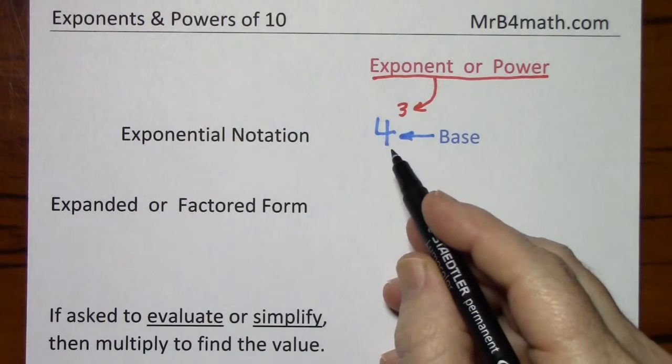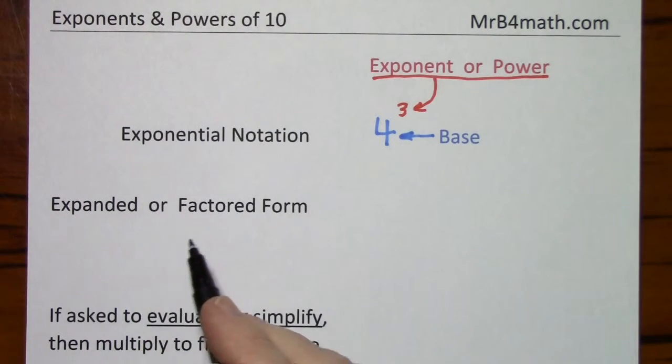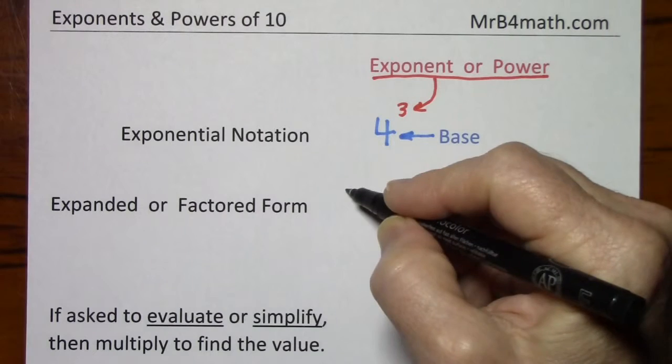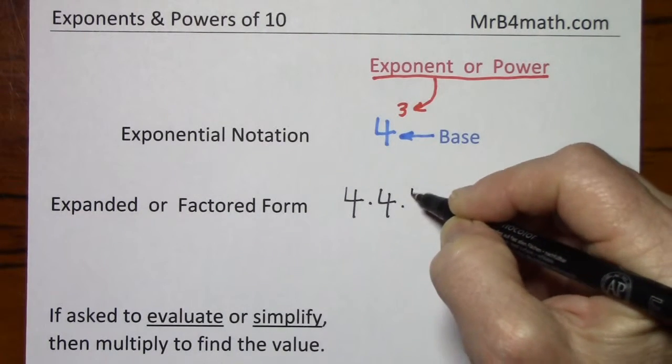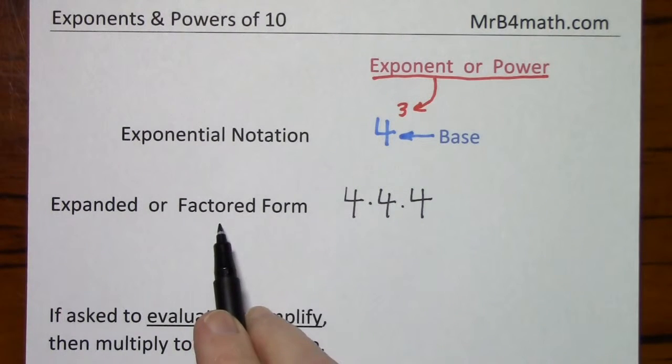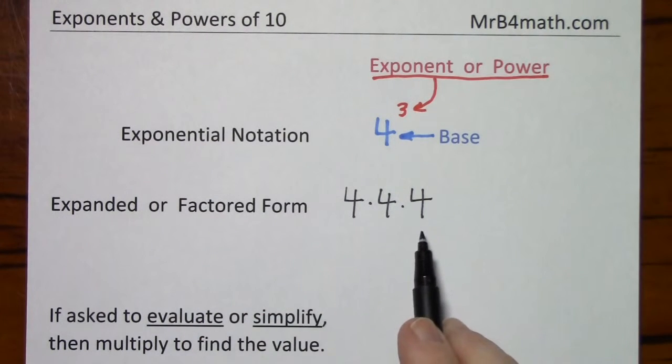If asked to write this number in expanded form or factored form, you write 4 times 4 times 4. Basically, factors are things that are multiplied, so this makes sense.